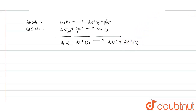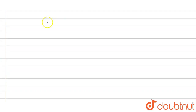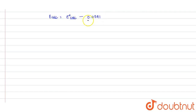By the Nernst equation, we know that E-cell equals E°-cell minus 0.0591 divided by the number of electrons transferred, into log of product concentration upon reactant concentration.